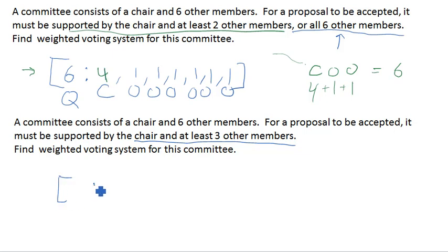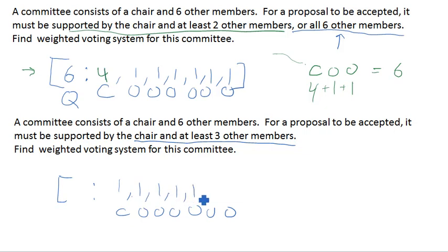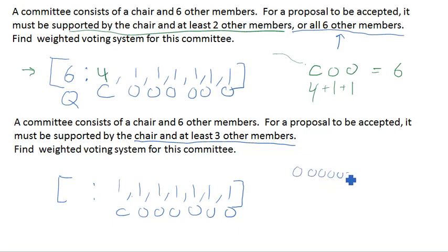If we imagine having a chair and six other members, and start by giving each member one vote for simplicity, in this case we don't want any coalition of only the other members to be able to reach quota. If the six other members got together with a total weight of six, they should not reach quota here. So we need to set the quota higher than six — at least seven.